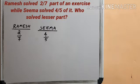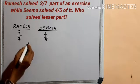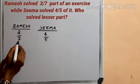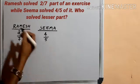See children, in order to find who solved lesser part of the exercise, let's compare 2/7 and 4/5. Comparison of fractions, familiar right? Here we can see different denominators. First we should convert into equal denominators.